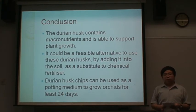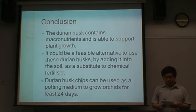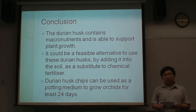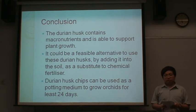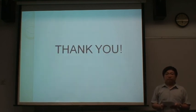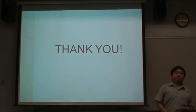In conclusion, the Durian Husk contains natural nutrients and is able to support plant growth, making it useful for agricultural purposes. In the long run, it could be a feasible alternative to add Durian Husk into soil as a supplement or chemical fertiliser. Durian Husk chips have also been shown to work as a growing medium to support orchid growth for at least 34 days. Thank you for watching our presentation.